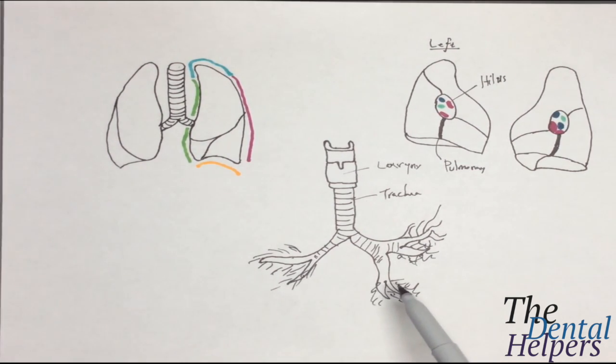If we look at the left, we're going to see two lobes. The bronchus divides into two secondary lobes.